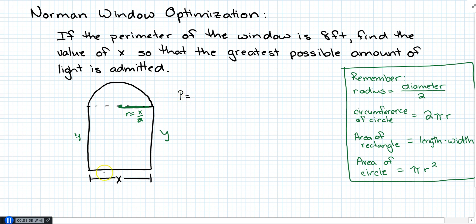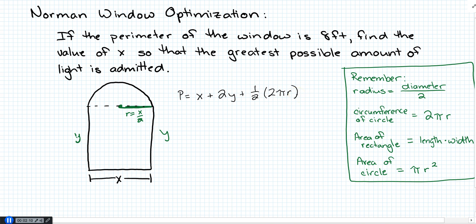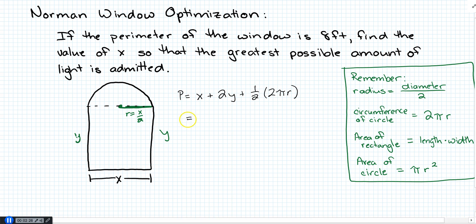They've told us the perimeter equals 8, so let's come up with a formula for the perimeter. Going all the way around: we have one X, two Y's, and then half the circumference of a circle. From geometry, the circumference of a circle is 2πr, but we only have half of that, so it's (1/2)(2πr).